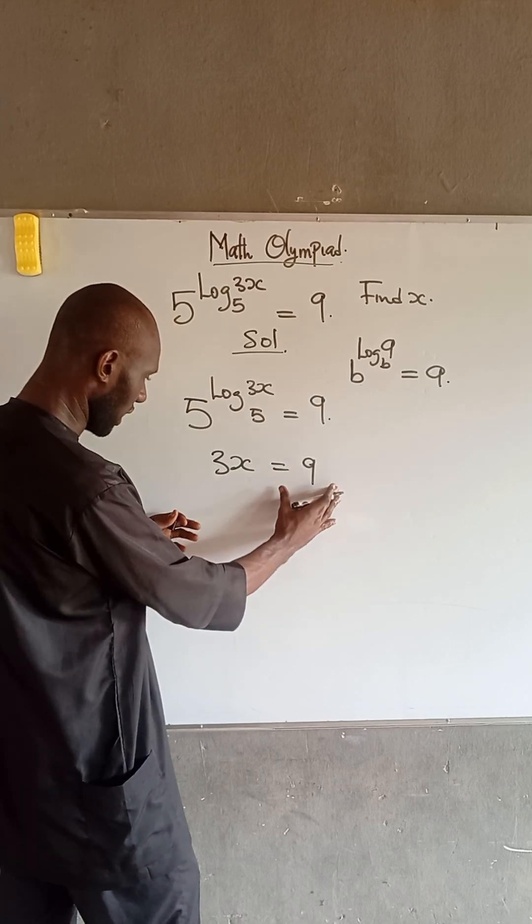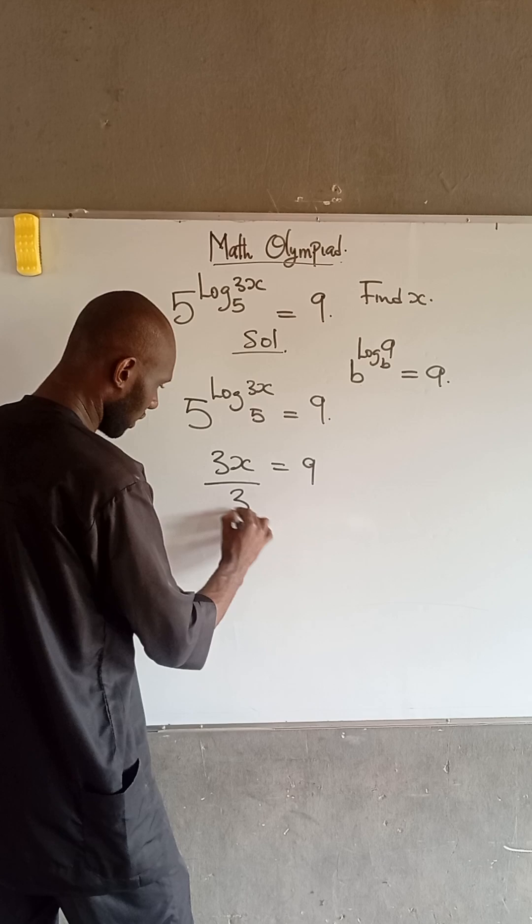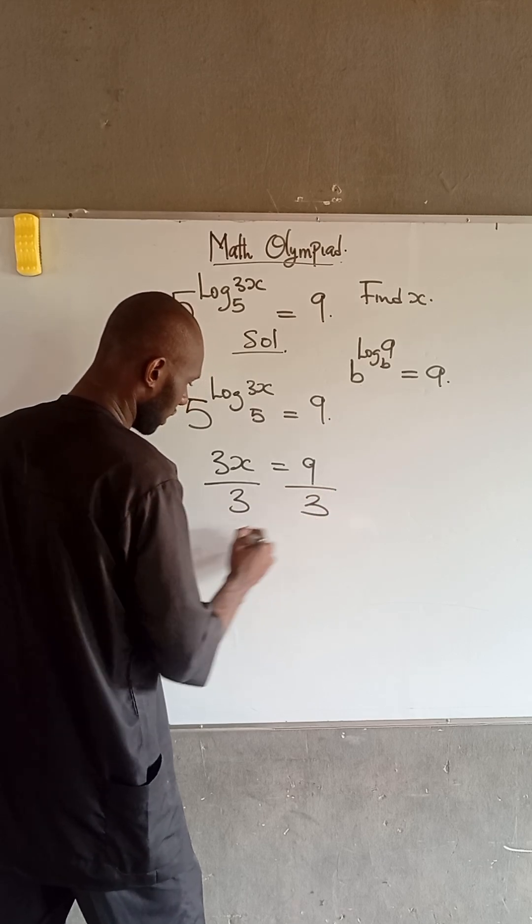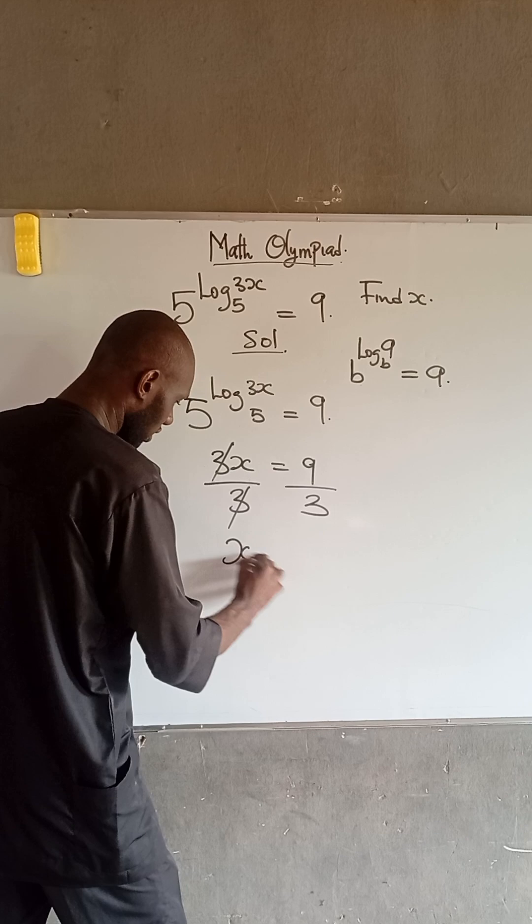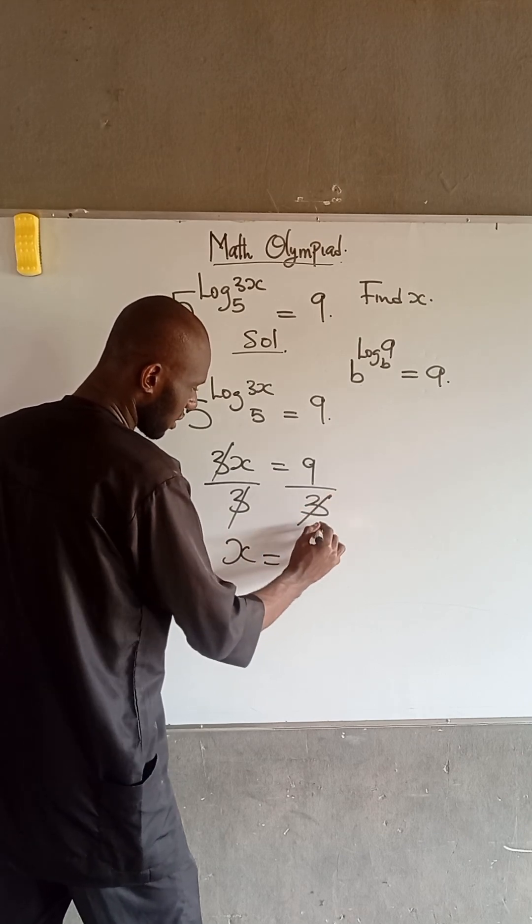So at this point to obtain the value of x, we divide both sides by 3. So therefore 3 we cancel out 3, so we have that x is equal to 3 cancel itself.